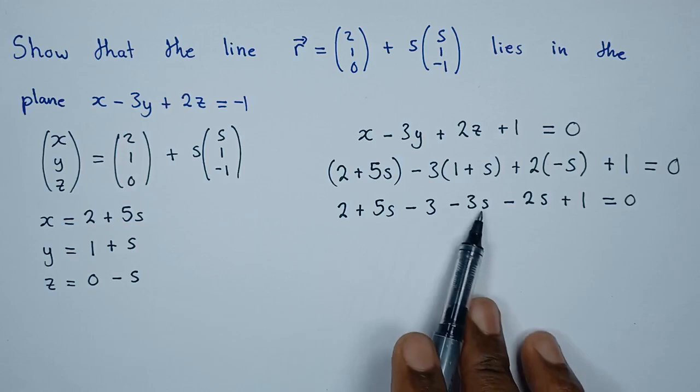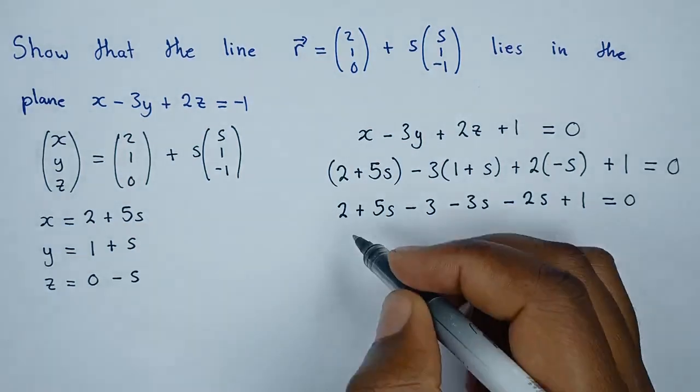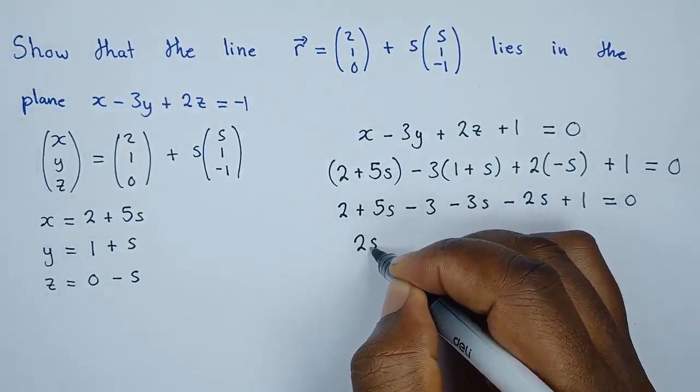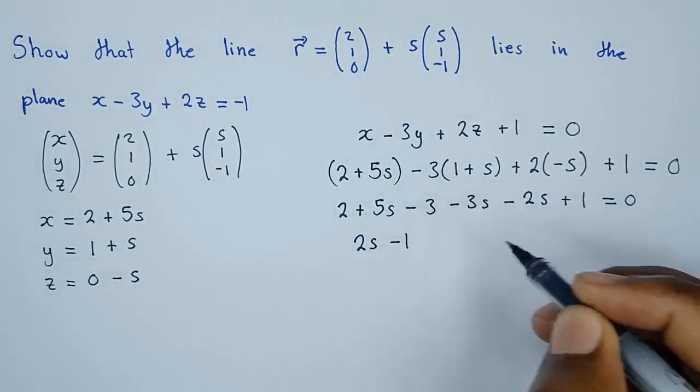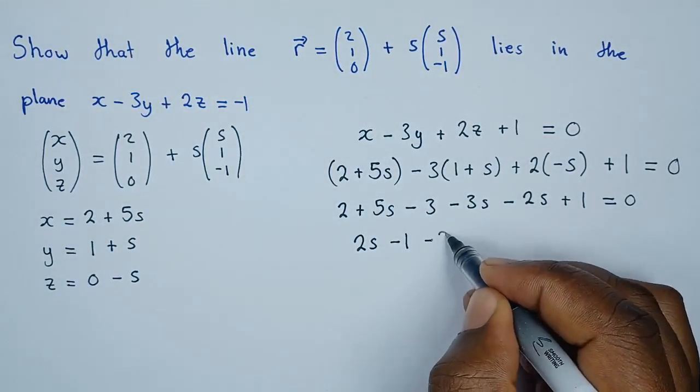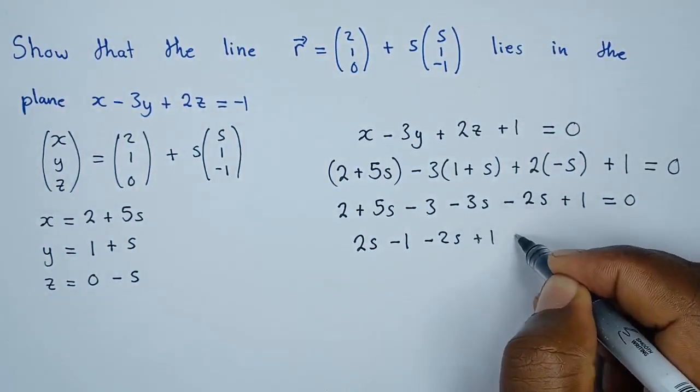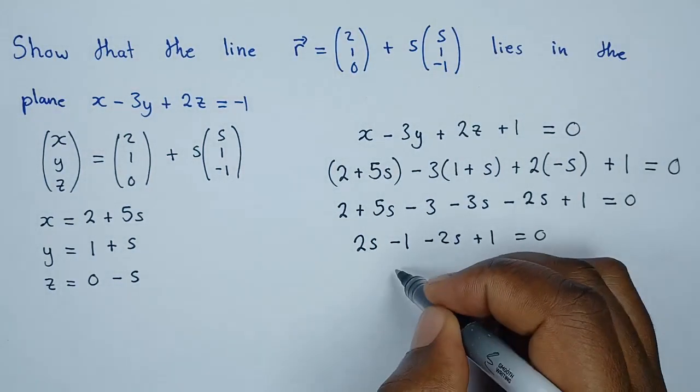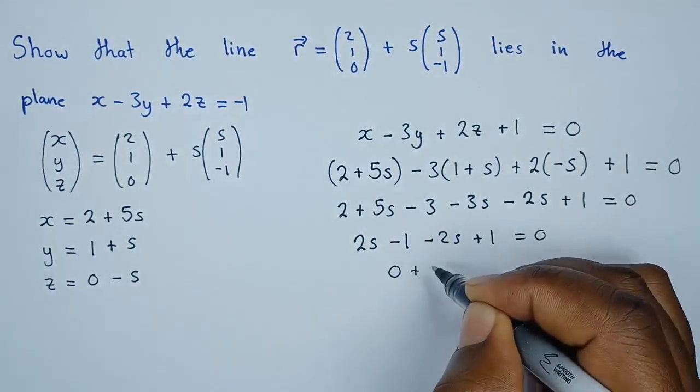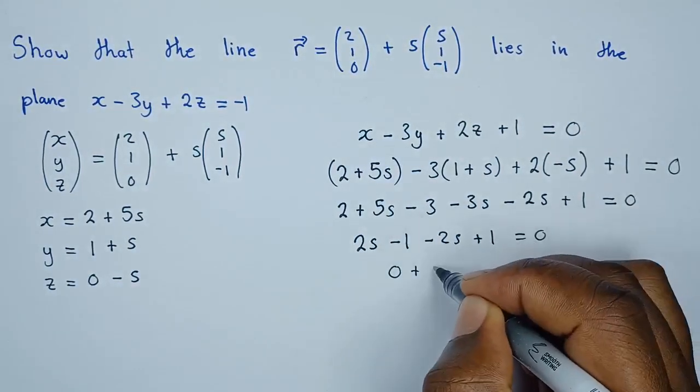We have 5s minus 3s to give us 2s. We have 2 minus 3 to get negative 1. We still have minus 2s and plus 1. So 2s and negative 2s give us zero, and negative 1 plus 1 gives us zero.